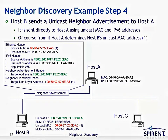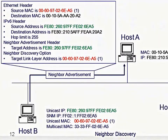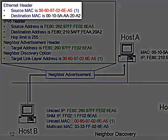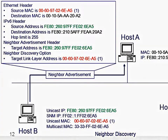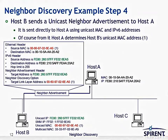Step four: once host B determines the Neighbor Solicitation packet is for it, it sends a unicast Neighbor Advertisement back to host A. Now that both nodes know each other's unicast MAC addresses, they don't have to deal with multicast at the MAC or IP layer anymore. Host B returns its burned-in MAC address, and both hosts can now use each other's burned-in MAC addresses to communicate.